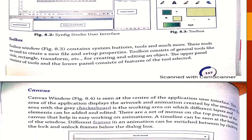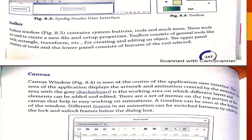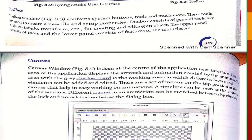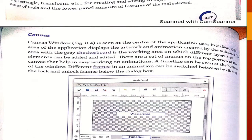The toolbox contains system buttons, tools, and much more. These tools are used to create a new file and set up properties. The toolbox consists of general tools like circle, rectangle, and transform for creating and editing objects. The canvas window is seen at the center of the application user interface — the working area is known as the canvas. A timeline can be seen at the bottom of the window, and different frames in an animation can be switched between by clicking on lock and unlock frames.